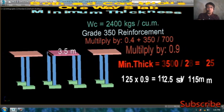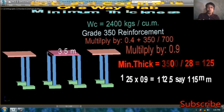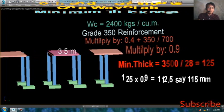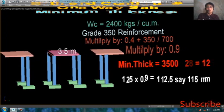Kaya lang, gaya po ng sinabi natin, imumultiply po yun ng 0.4 plus 350 divided by 700. Ang answer po dun is 0.9. 125 times 0.9 is equal to 112.5 millimeter.